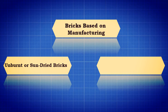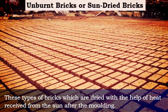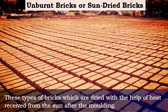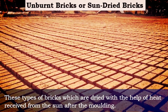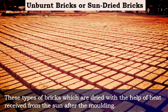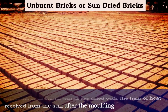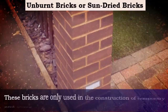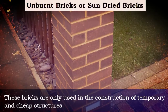Based on how they are manufactured, bricks are mainly categorized into two types: unburnt or sun-dried bricks, and burnt bricks. Unburnt or sun-dried bricks are dried with the help of heat received from the sun after molding. These bricks are only used in the construction of temporary and cheap structures.